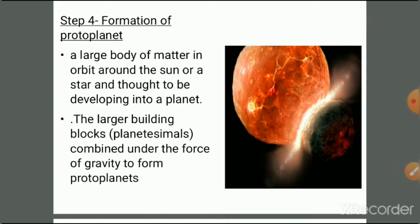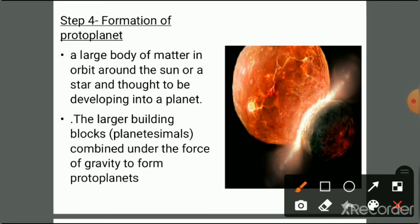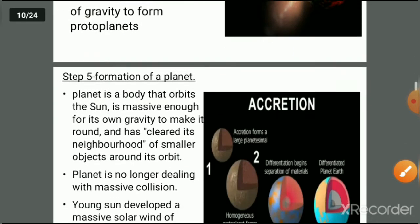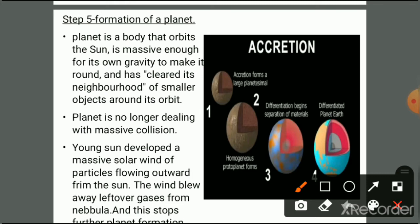Step 4 is the formation of protoplanets. Planetesimals combine under the force of gravity to form protoplanets — large bodies of matter in orbit around the Sun, thought to be developing into a planet. In Step 5, planet formation takes place. A planet is a body that orbits the Sun, is massive enough for its own gravity to make it round, and has cleared its neighborhood of small objects in its orbit.